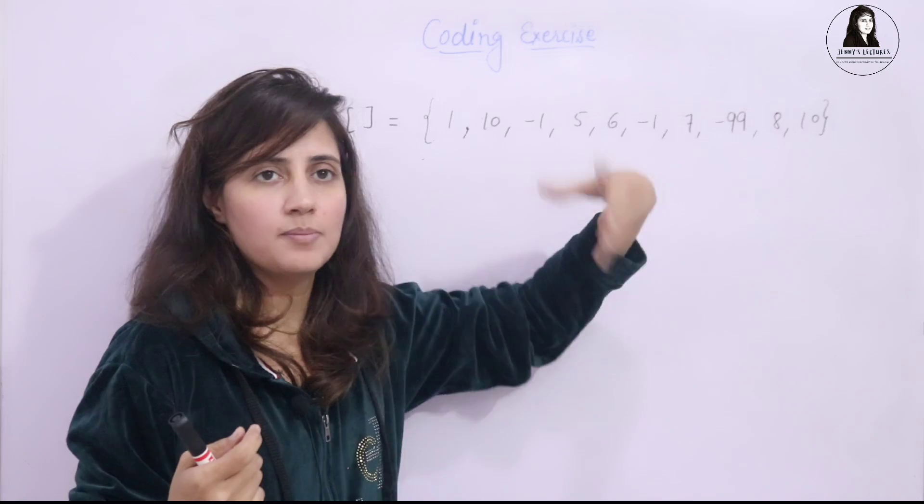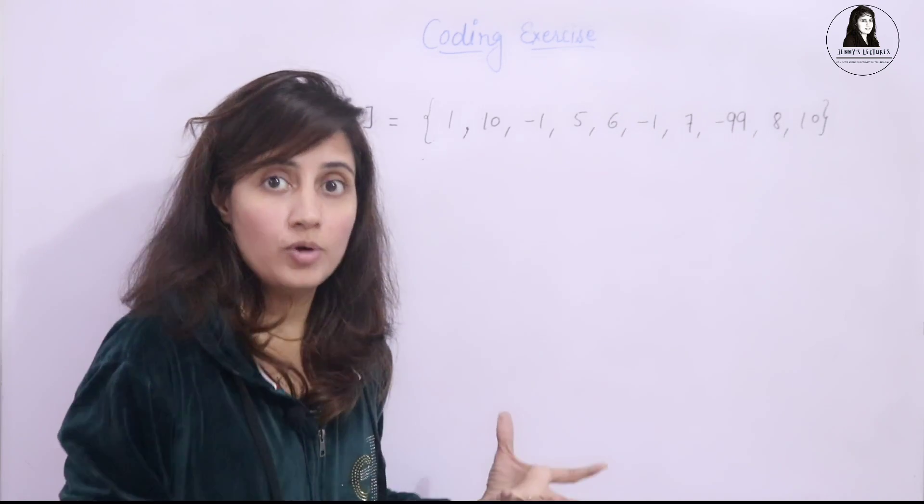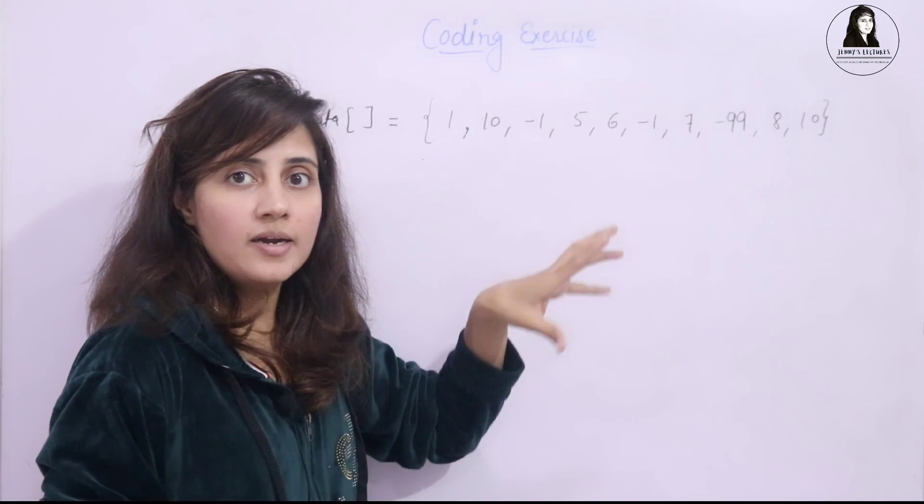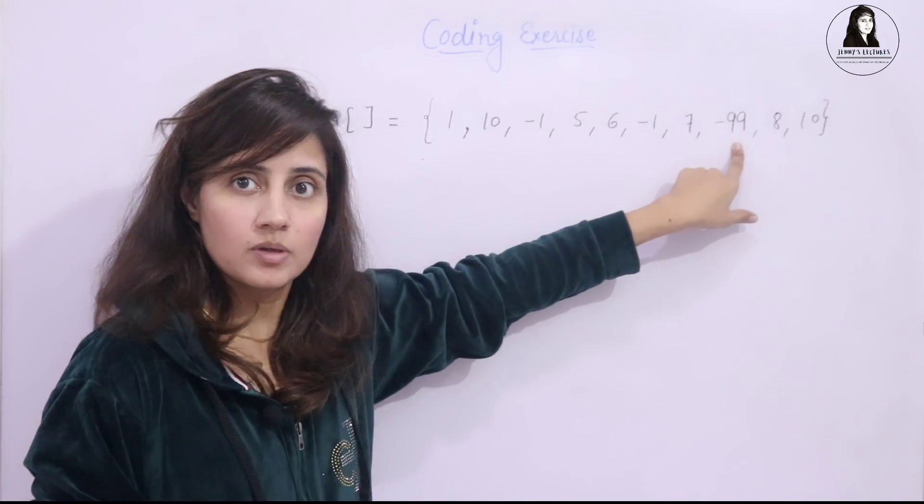It is being sent by some device. Let's assume. And that device also sends sometimes noise. The noise is represented by minus 1. And one stopping signal. Stopping signal is represented by minus 99.